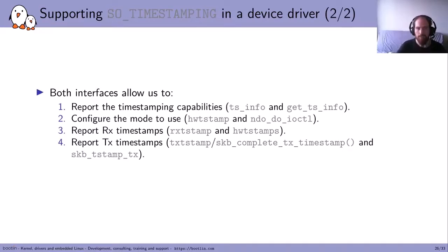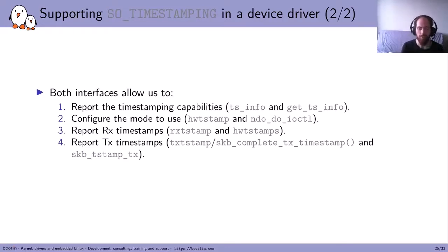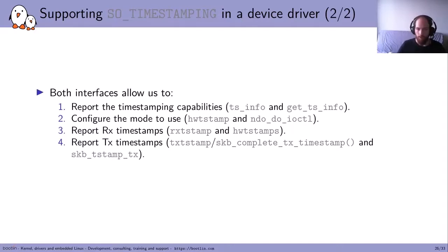One important aspect of TX timestamps is that they can be asynchronous. The packet is sent to the hardware, goes through it, and the timestamp is issued later. There is a special callback to call when those TX timestamps become available after the packet has been sent.